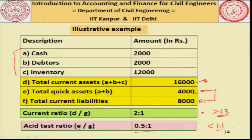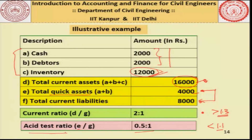Comparing with the norms, the current ratio of 2 to 1 is greater than the required 1.3 to 1, but the asset test ratio of 0.5 is less than the required 1.1 to 1. So you can see that if total assets are 16,000, most of them are actually blocked in inventory, leaving very little quick assets. If you are increasing inventory at the cost of cash and debtors, the asset test ratio will go down — you will not be able to immediately honor your immediate commitments coming from current liabilities.